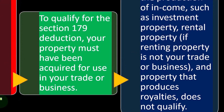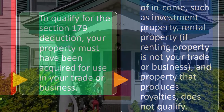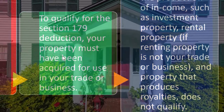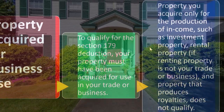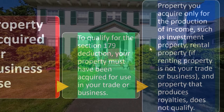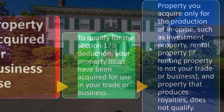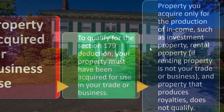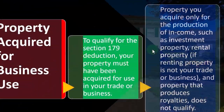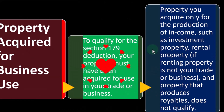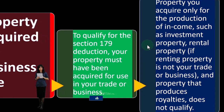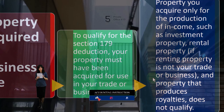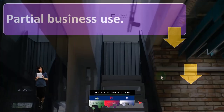Property acquired only for the production of income — such as investment property you're holding waiting for it to go up in value, or rental property — doesn't qualify. Rental property is reported on Schedule E rather than Schedule C because you may not be subject to self-employment tax if you're not actively involved. However, passive income rules may still apply, and if renting is not your trade or business, and property that produces royalties, those do not qualify.